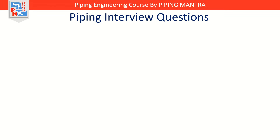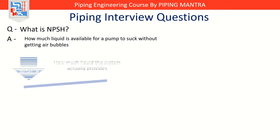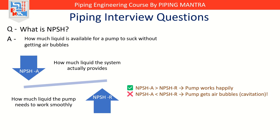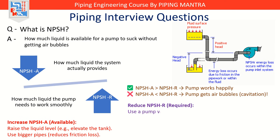Preventing cavitation is all about managing something called NPSH. What is NPSH? NPSH stands for Net Positive Suction Head — basically how much push the liquid has to enter the pump without forming bubbles. There are two types: NPSH Available (NPSHA) — what the system can provide; and NPSH Required (NPSHR) — what the pump needs to operate smoothly. If NPSHA is greater than NPSHR, your pump is happy. If NPSHA is less than NPSHR, you get cavitation. To improve NPSHA, you can raise the liquid level in the supply tank, use bigger suction pipes, or reduce pipe friction and avoid sharp bends. Or you can select a pump with a lower NPSHR.